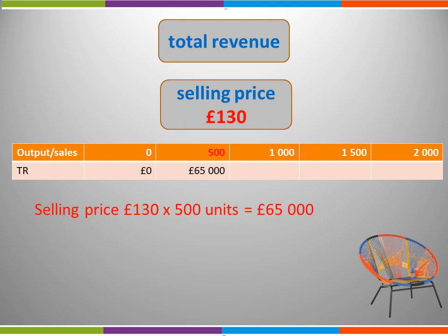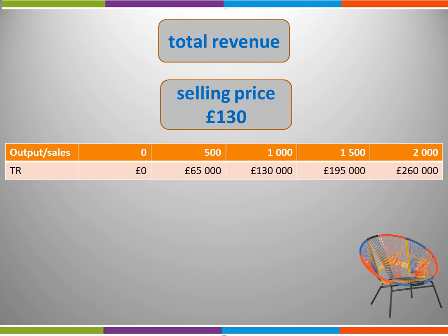Why not pause the video now whilst you fill in the rest of this table? How did you get on? Did you get these figures? We can clearly see that as sales increases, total revenue also increases. If the business makes sales of 2,000 chairs, it now has a total revenue of £260,000.